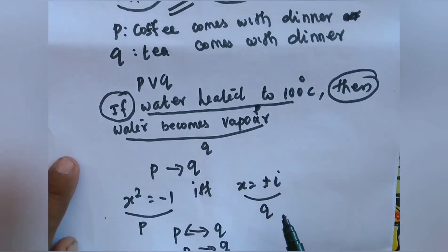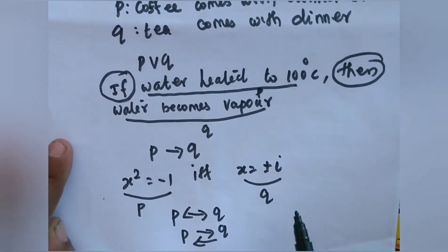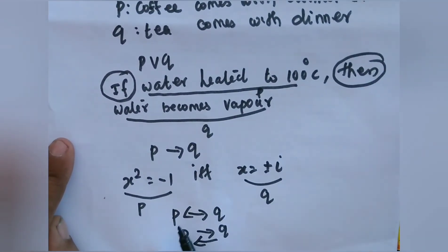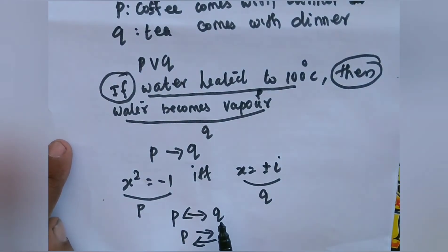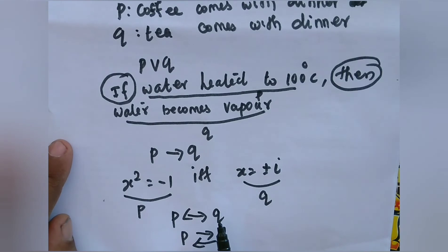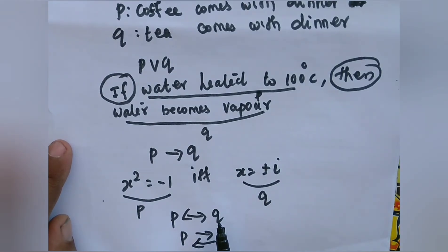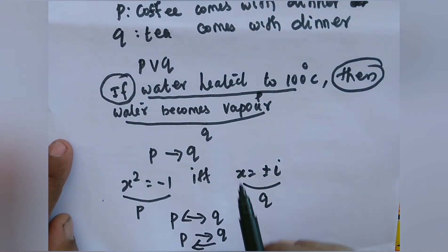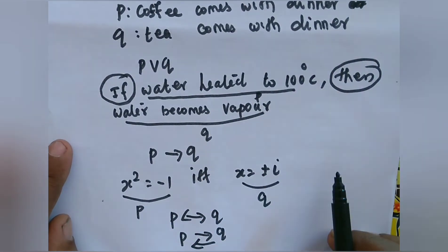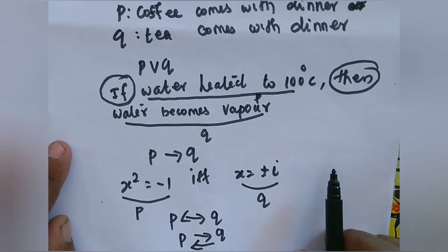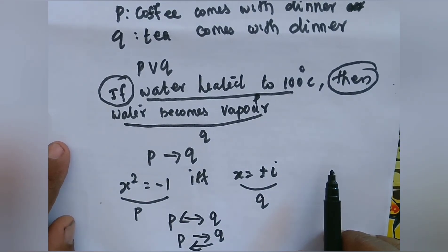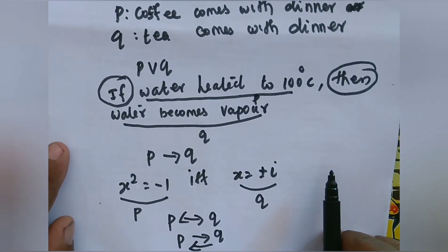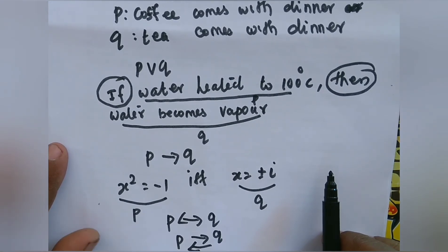These are the five models showing how to convert a given sentence into symbolic form. The exam questions will be combinations of these five models.